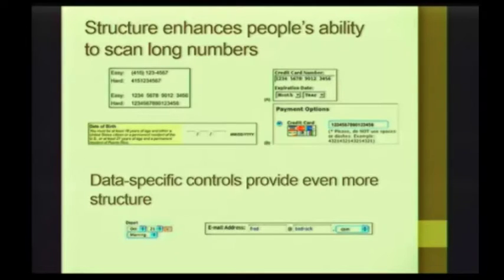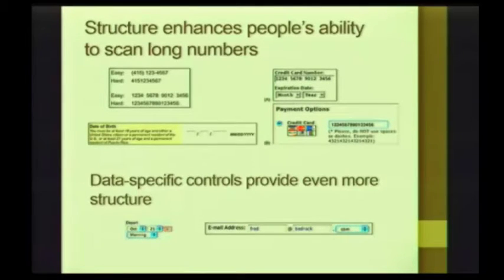It's even nicer if it will automatically jump from one box to the other. Because how many of you type a date of birth in really quick and you're still in the first box — like, oh, that didn't work. So again, think about the user. Not just in terms of breaking it up, but that added code that can help them quickly enter and read information.